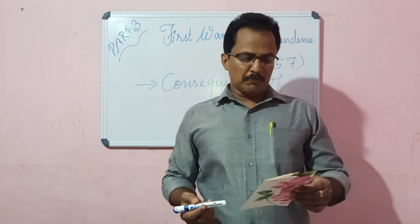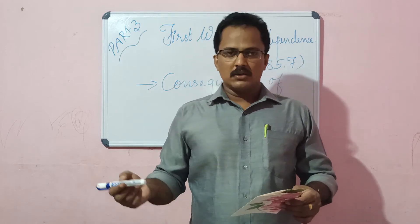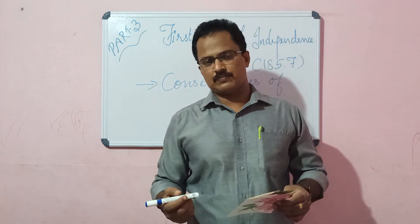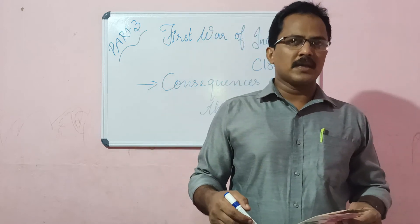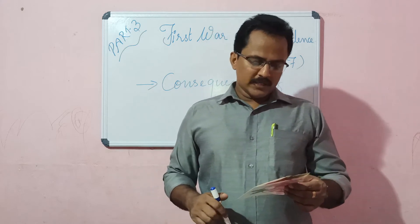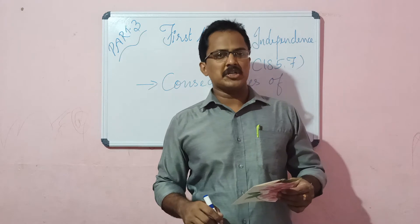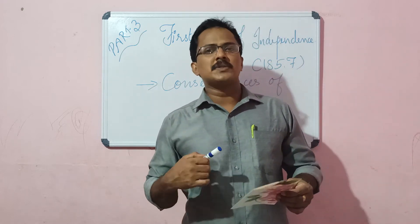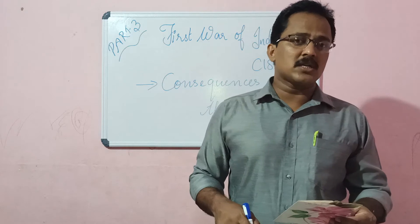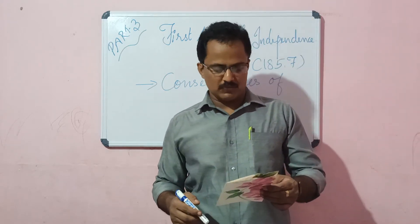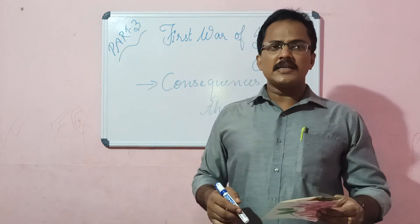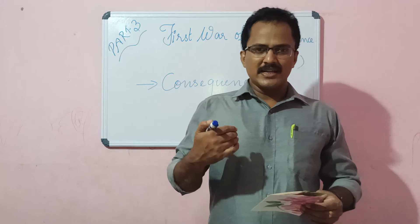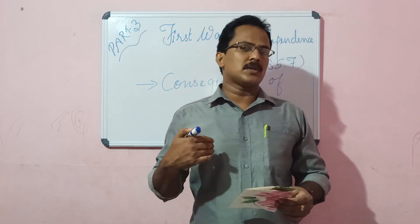The fifth result is the policy of divide and rule. The British already used the method of divide and rule between Hindus and Muslims, and after the revolt of 1857, they made it more systematic. The sixth result is racial antagonism or racial superiority. The seventh consequence is foreign policy — the foreign policy of India was designed and dictated by Britain after the revolt of 1857. The eighth result is increased racial bitterness, somewhat similar to racial antagonism.